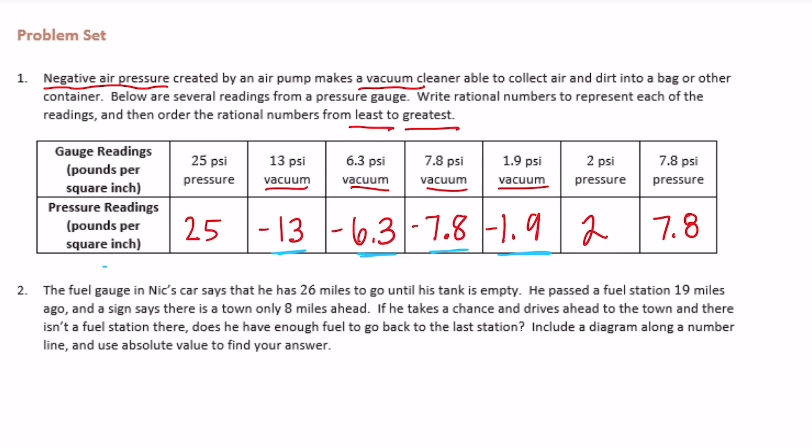Let's see, next would be negative 13, then negative seven and eight-tenths is less than negative six and three-tenths is less than negative one and nine-tenths.